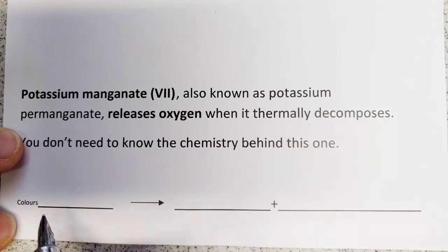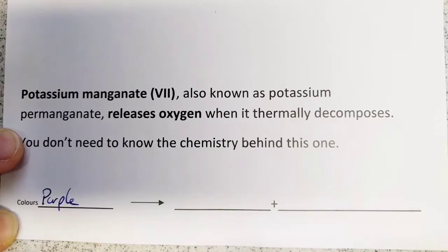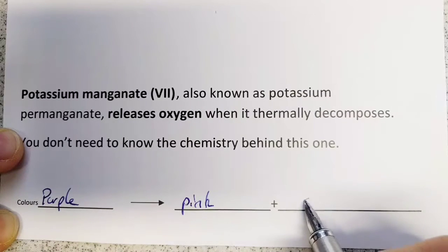Potassium permanganate starts off as a purple color. When you heat it up, you end up with this pink color, get it on your hands it turns brown, and it releases oxygen which again is colorless.